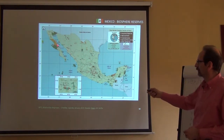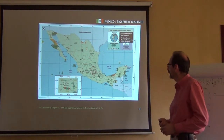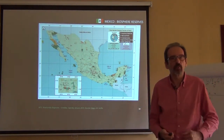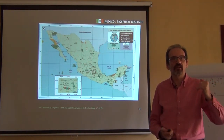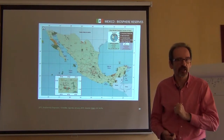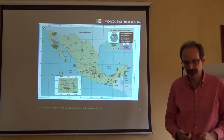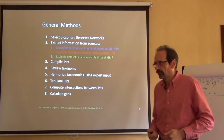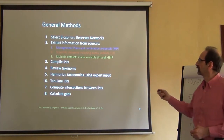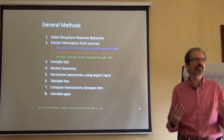There are a lot of them, those described in green over there. What we did was to set up a workflow trying to see whether there was missing knowledge about the biosphere reserves by looking at how many species we knew from different sources. The general workflow was like this: we select a network of biosphere reserves, and we extract information from different sources.